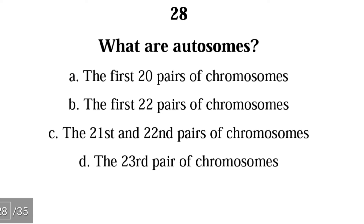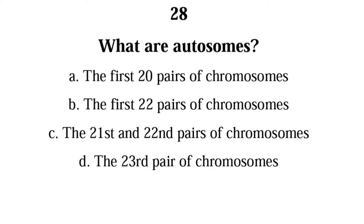Number twenty-eight: what are autosomes — the first 20 pairs of chromosomes, the first 22 pairs of chromosomes, the 21st and 22nd pairs, or the 23rd pair? The correct answer is B — autosomes are the first 22 pairs of chromosomes.